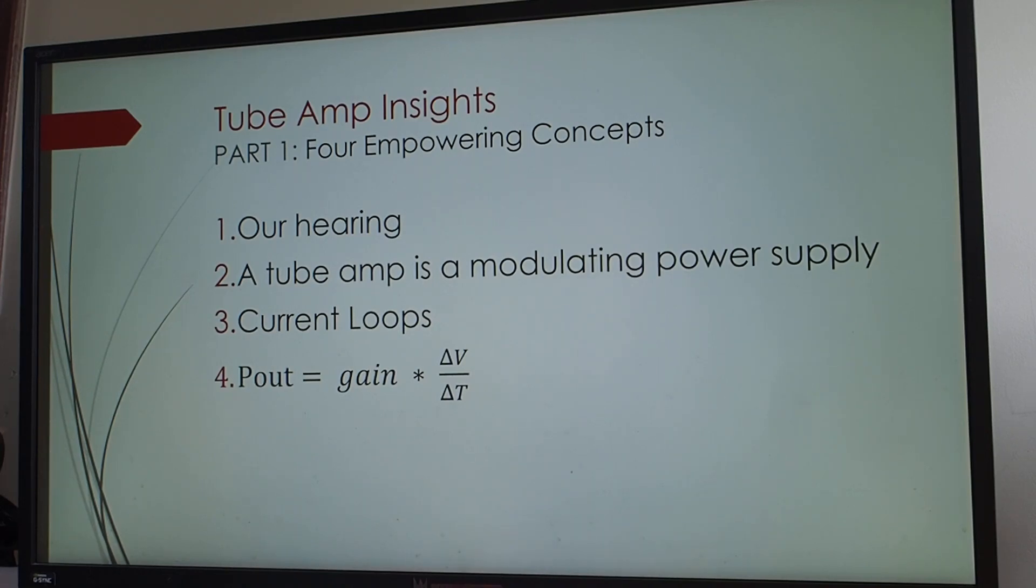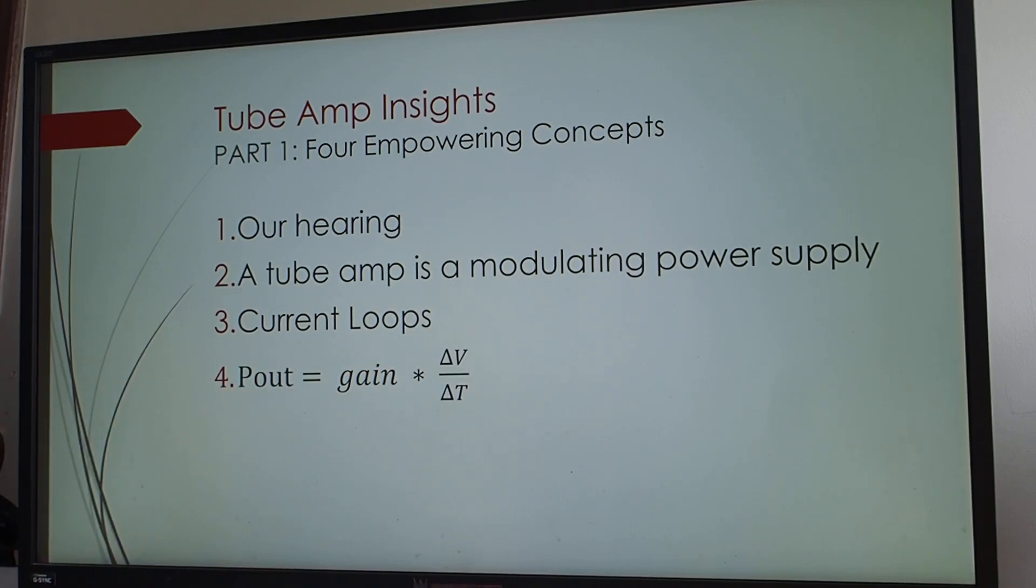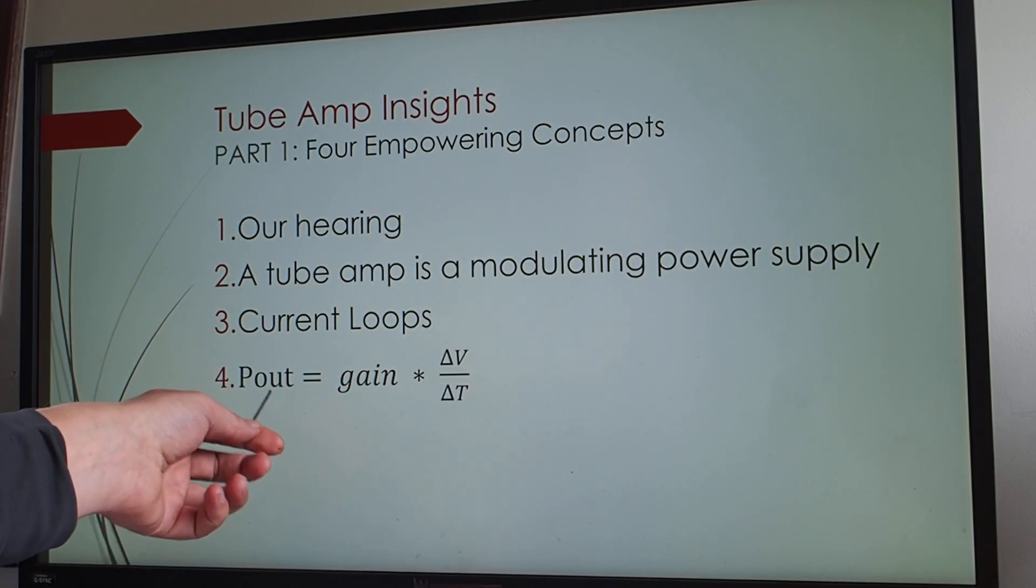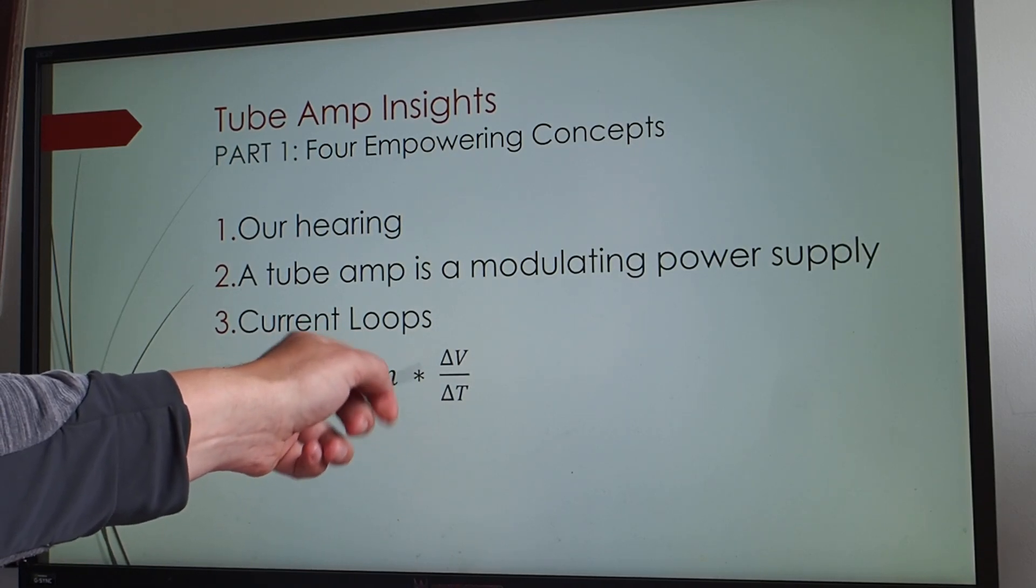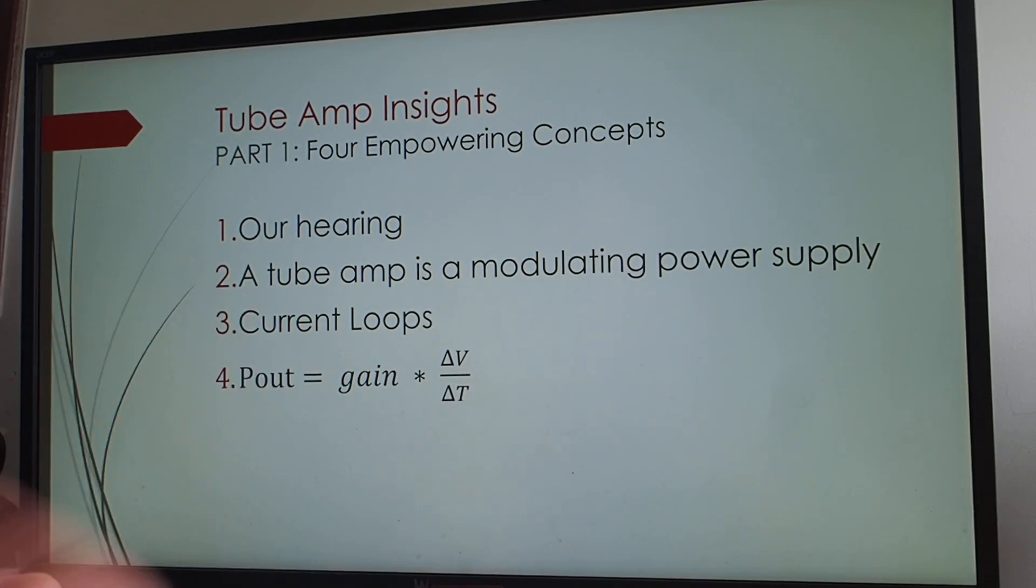The other concept is a tube amp is a modulating power supply. That is an interesting concept. Then I want to have a look at current loops. And the fourth topic is a formula, which I think if you inspect it, you get a lot of clarity around what an amp needs to do. For tube amps, that formula goes: Pout is gain times delta V over delta T. We'll get into the consequences of that. If you start thinking about this formula, you'll actually come to some insights.